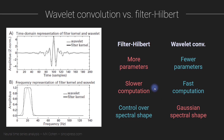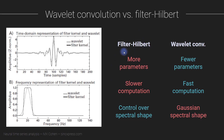For these reasons, I generally prefer wavelet convolution — obviously these are its two advantages over filter-Hilbert. There are definitely situations in my case, the kind of analyses that I do, where it's much more rare that I will prefer filter-Hilbert, but this is just something to keep in mind.